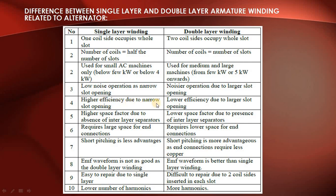Fifth difference: single layer has higher efficiency due to narrow slot opening; double layer has lower efficiency due to larger slot opening. Sixth difference: single layer has higher space factor due to absence of an interlayer separator; double layer has lower space factor. Seventh difference: single layer requires larger space for end connections; double layer requires lower space for end connections. Short pitching is less advantageous in single layer, but more advantageous in double layer as end connections require less copper.